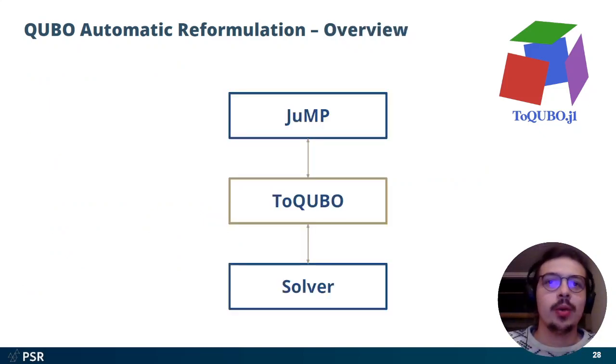What is going on? ToQUBO goes in between Jump and the solver, and it eavesdrops on your source model, and presents to the solver a reformulated QUBO model, and that happens just transparently.